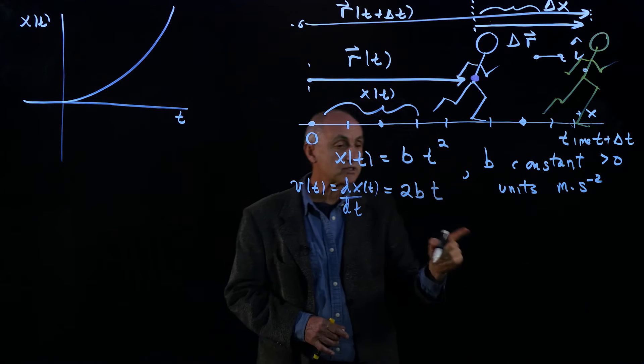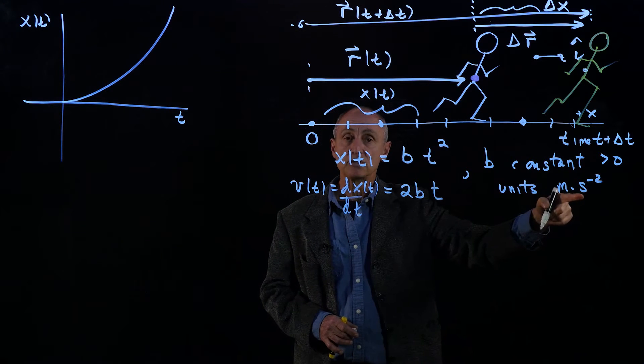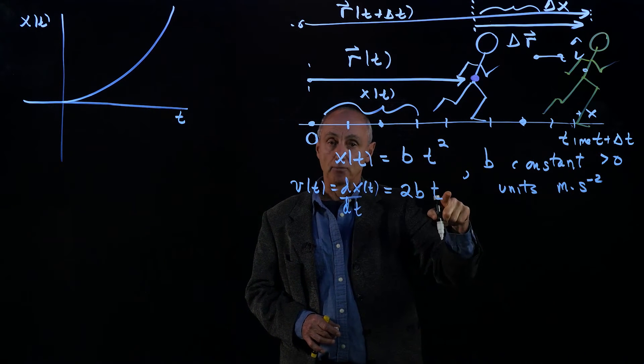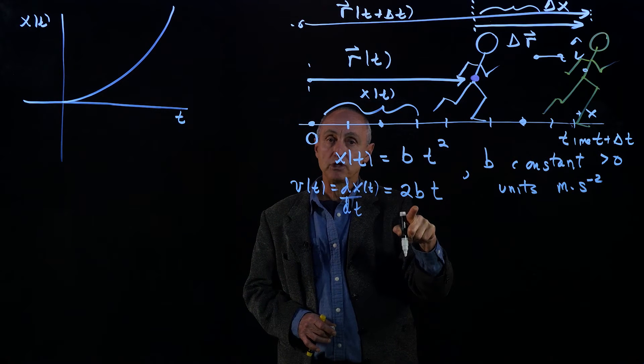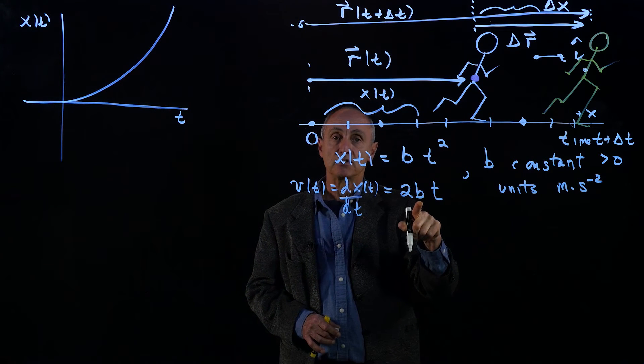Again, let's look at our units. Because b has the units of meters per second squared, and when multiplying that by second, we have the units of velocity in SI units as meters per second.